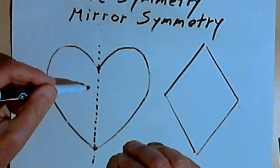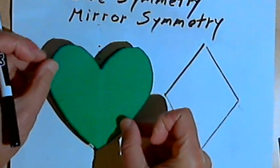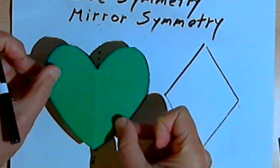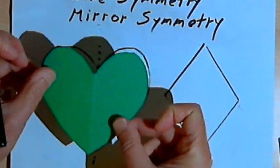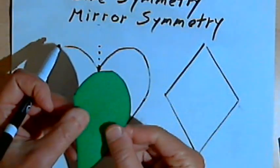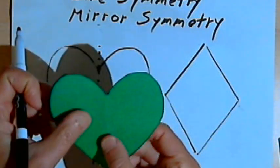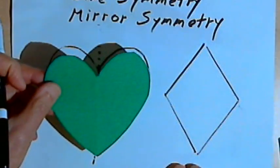Another way of thinking of reflection symmetry would be if you had, as I have here, let's say a cutout of that image. Now if I take this heart, this cutout that I have, and fold it along the line of symmetry, both sides will match up perfectly. So that's another way of seeing what reflection symmetry is about.